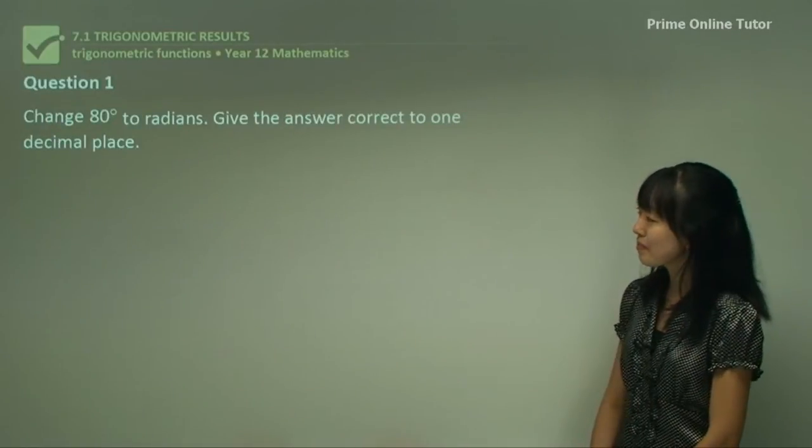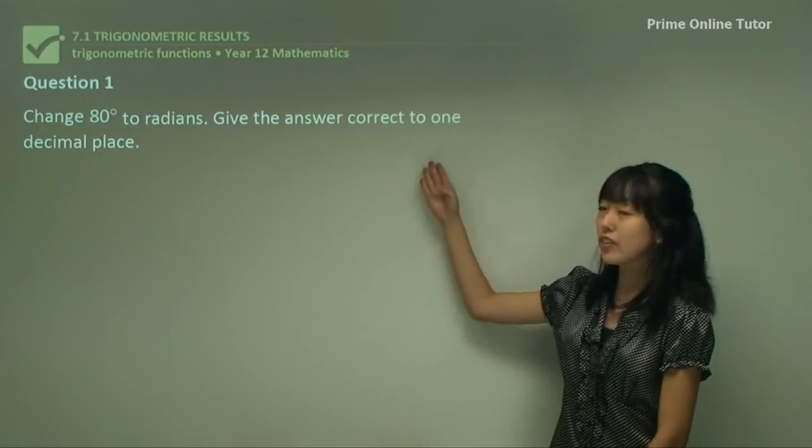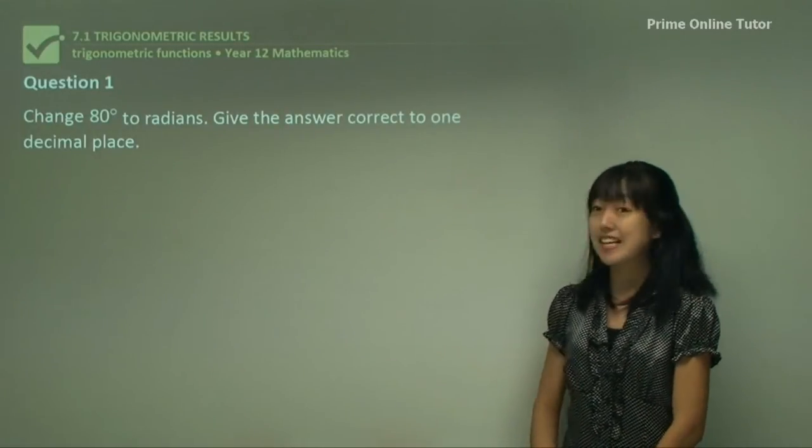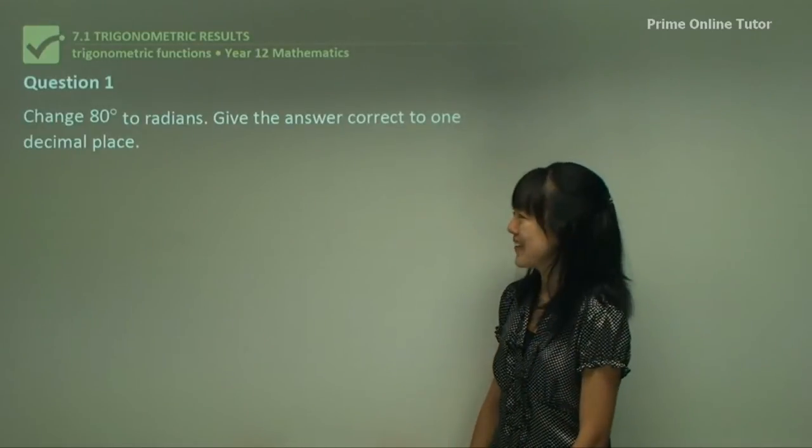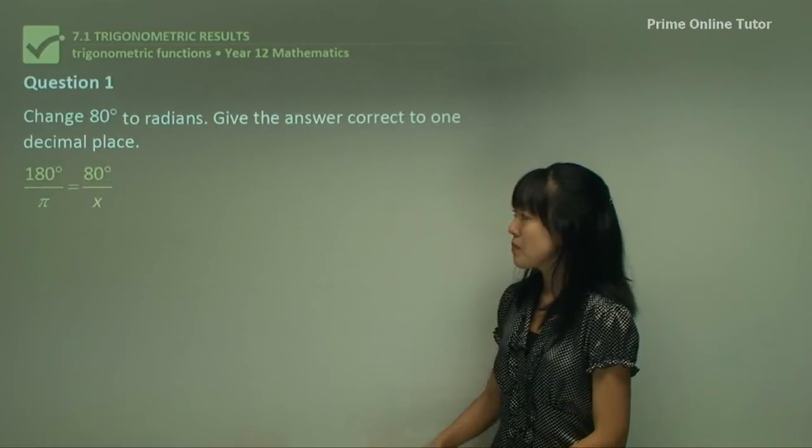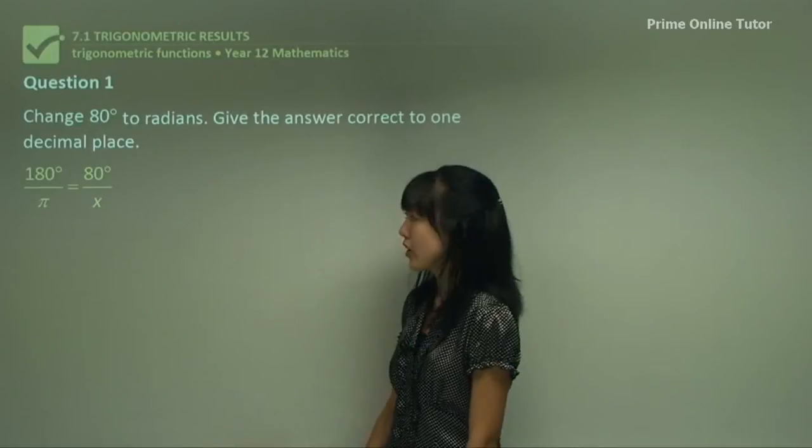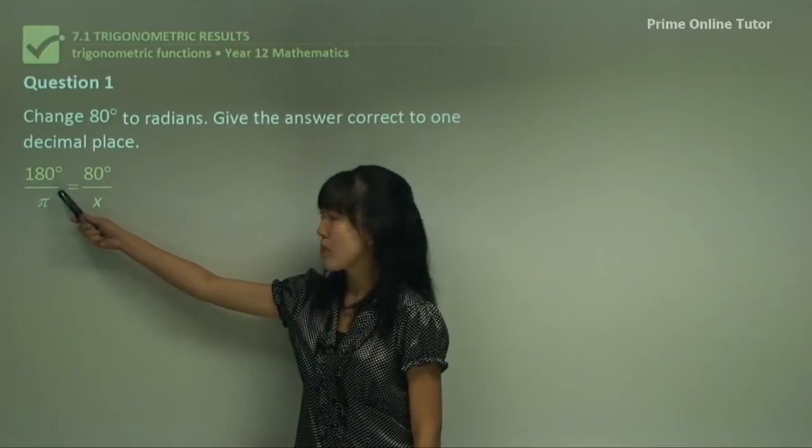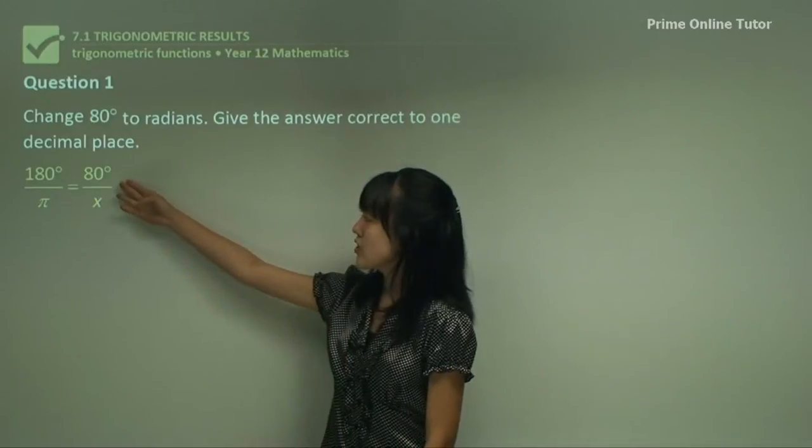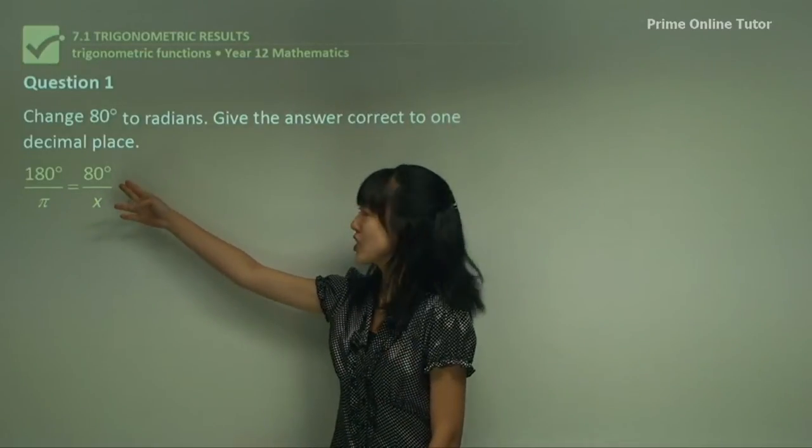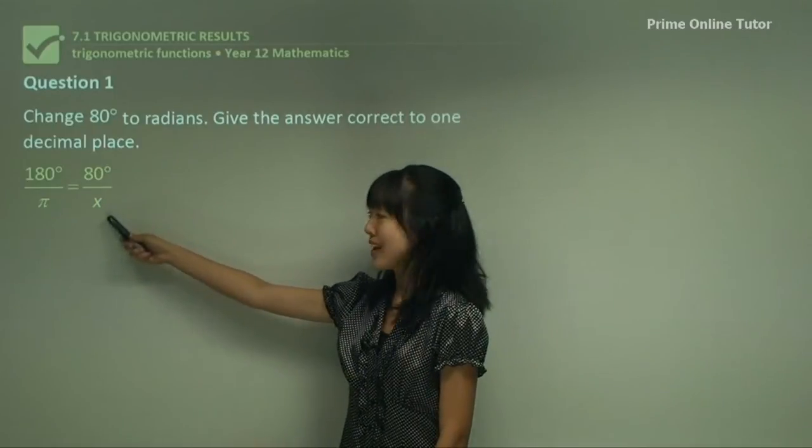Question one: change 80 degrees to radians. Keep in mind that the question asks to give the answer to one decimal place, so make sure that you do answer the question. First step would be to write this. Don't worry, this isn't a formula, this is just writing what we already know. 180 degrees is equivalent to π as I said before. All you need to do is write 80 degrees which is in the question, and we write an x because that is what we want to know in radians.